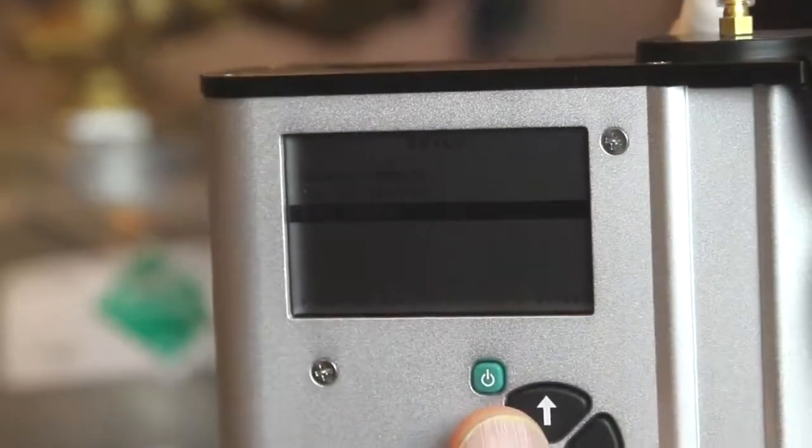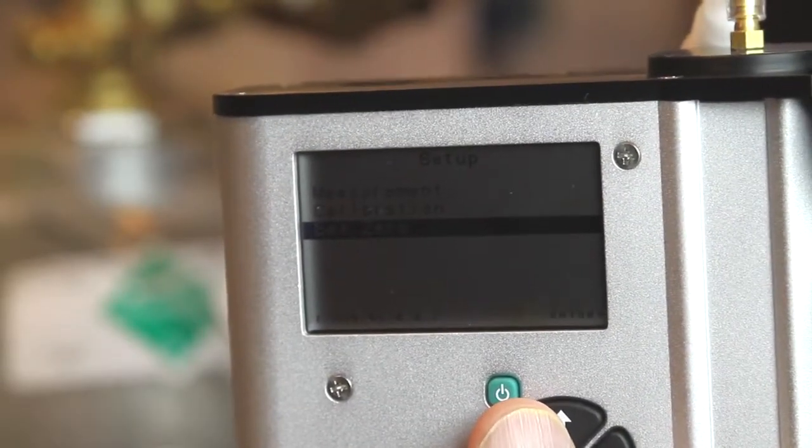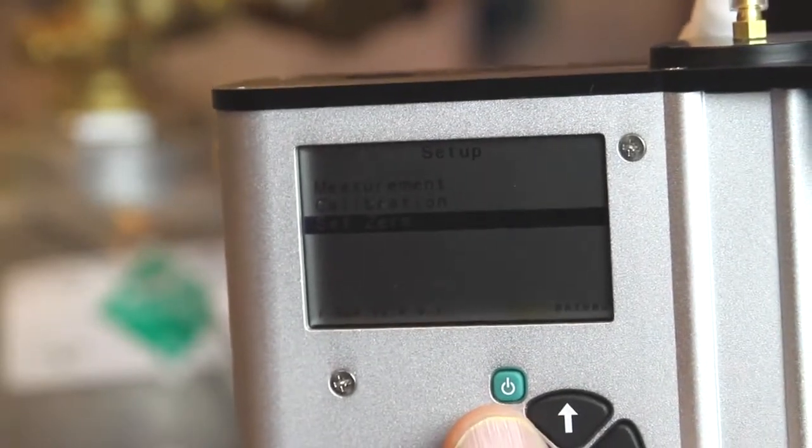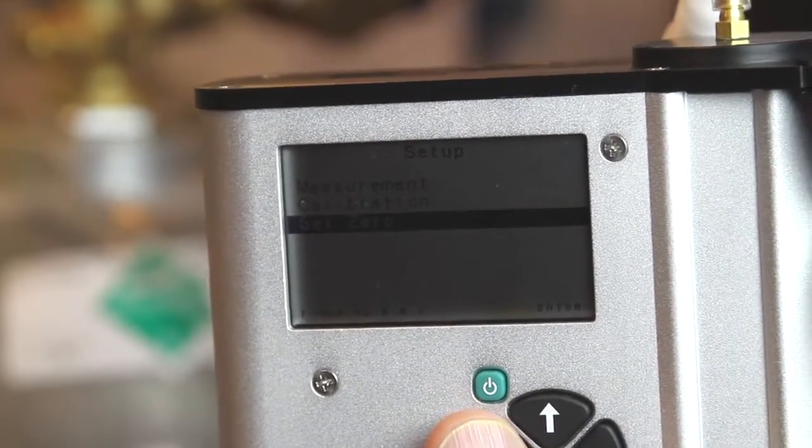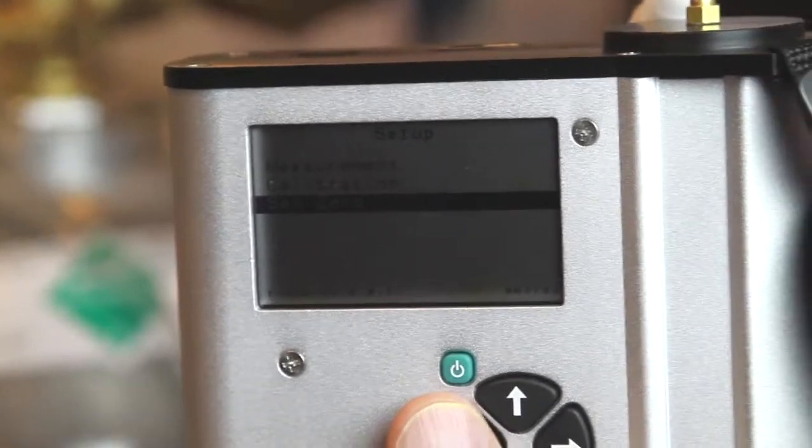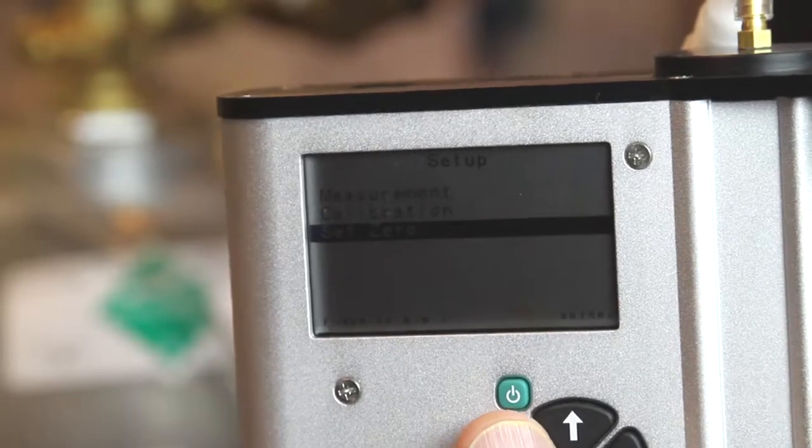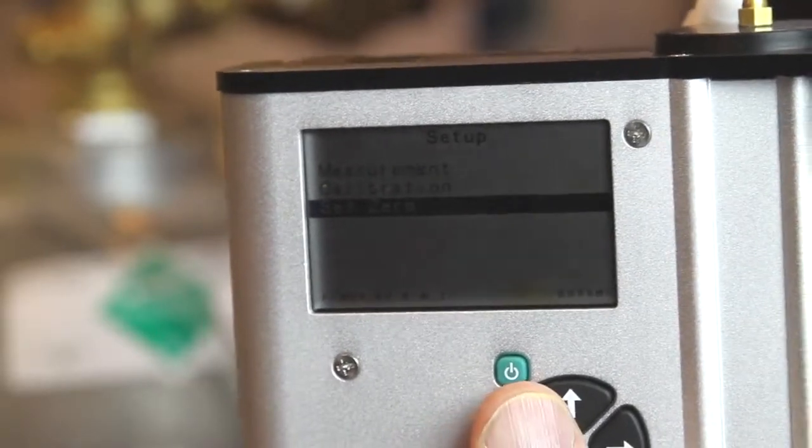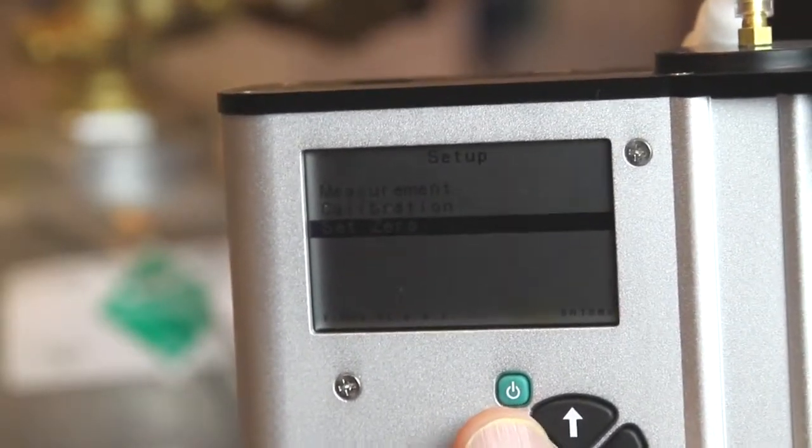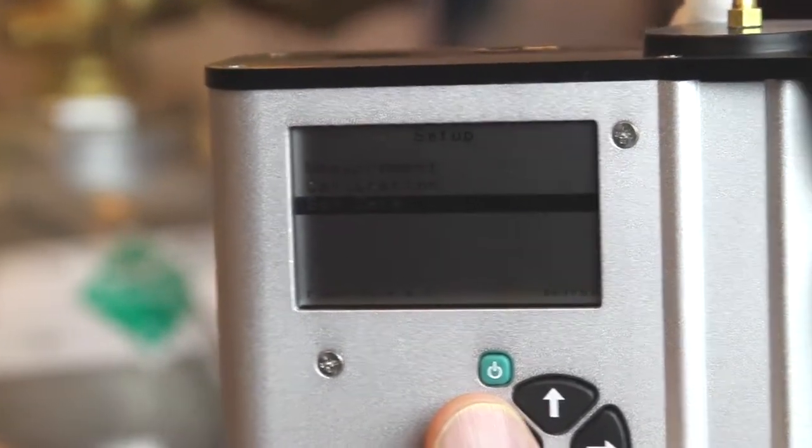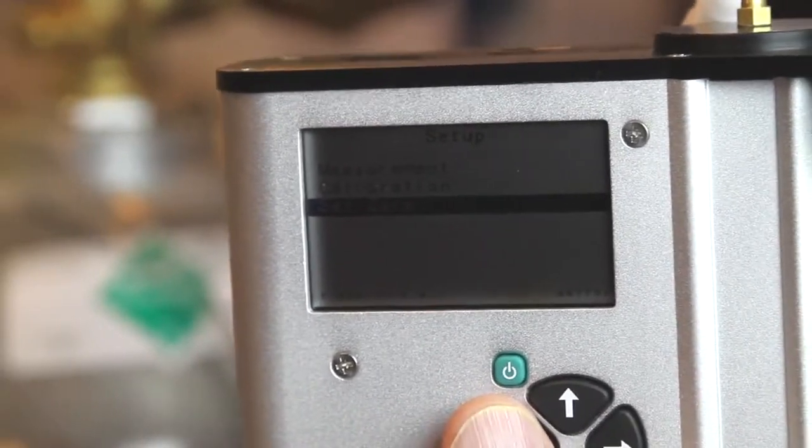You see here we also have a set zero. The instrument's able to do an internal zero calibration. We're able to use the electronics inside to create our own sample of zero gas and easily do a zero calibration without any external gases. The external gases are however required when we need to do an annual calibration.